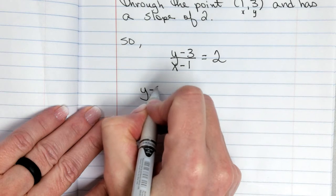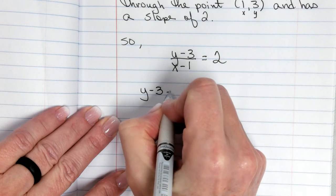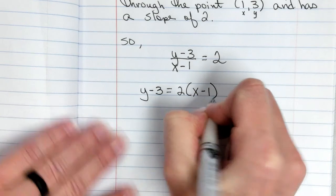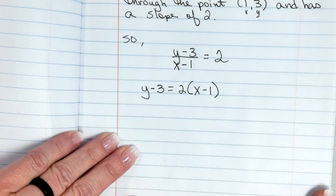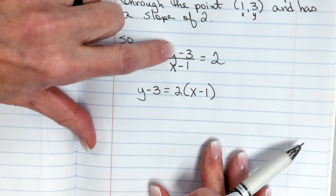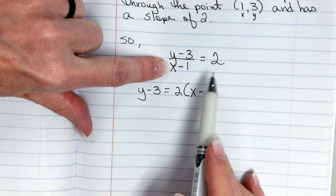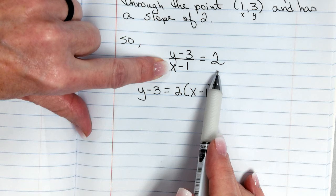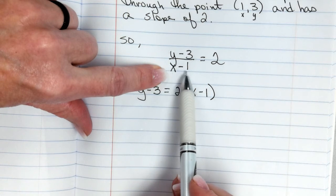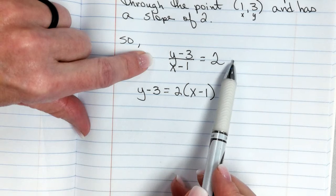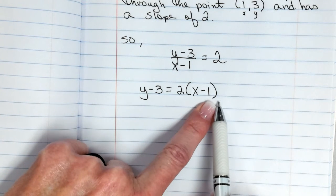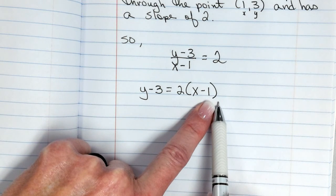Then y minus 3 equals 2 times x minus 1, because we can do that. Think about this: this means this divided by this gives you this. So the opposite of dividing is multiplying. If I was trying to isolate this, I would have multiplied x minus 1 on both sides. This would have canceled out. I would have only had y minus 3 left, and I would have equaled 2 times x minus 1. Are you with me on that?